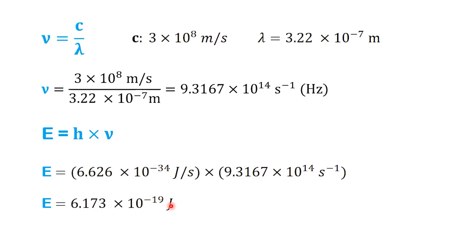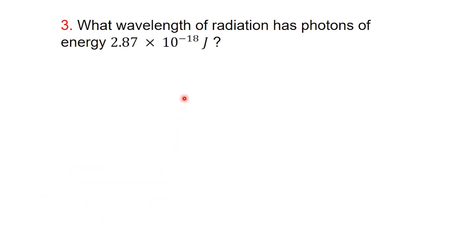So far, we've gone from frequency to energy in part 1, and from wavelength to energy in part 2. But what if we already know the energy of the photon and need to find its wavelength? That's what we'll do in part 3. Here, the energy is 2.87 times 10 to the minus 18 joules.